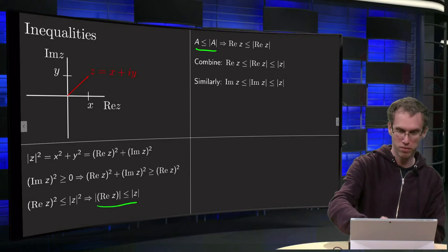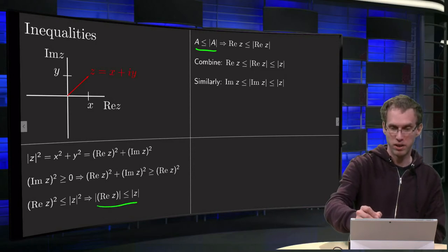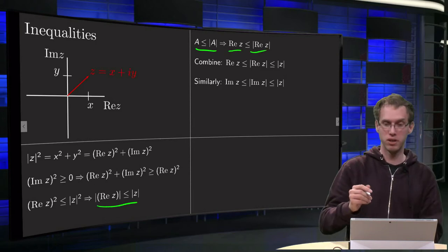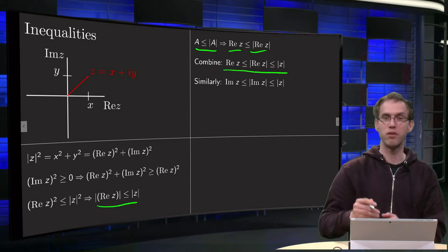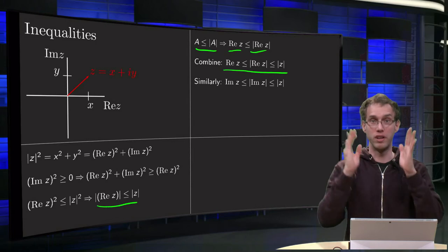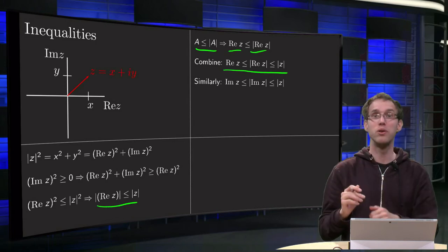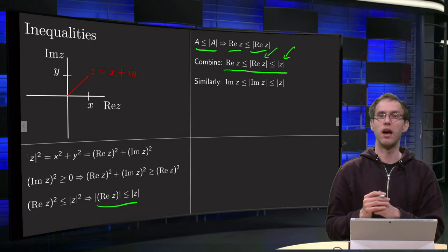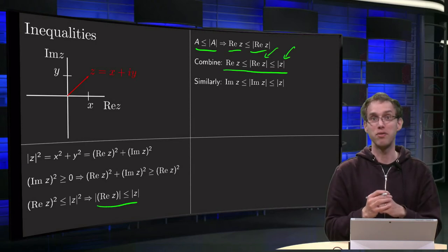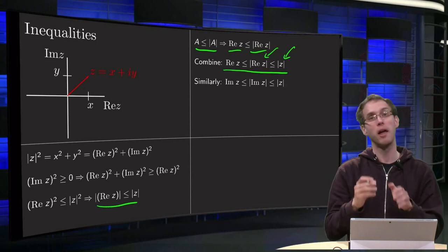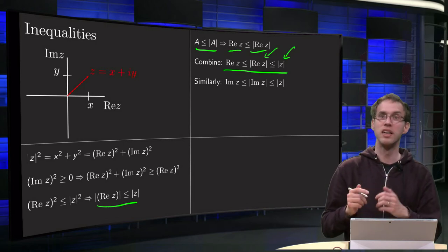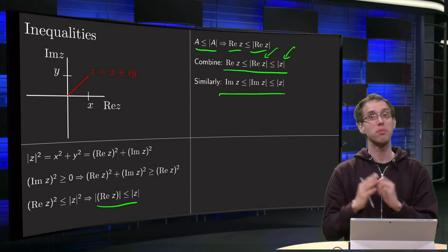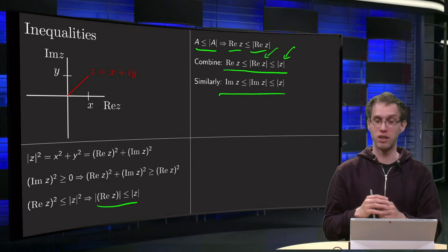Combining this with the previous inequality, and plugging in the real part of z for a, we have: the real part of z is smaller or equal to the absolute value of the real part of z, which is always smaller or equal to the norm of z. Notice that the absolute value signs here actually mean something different — the first ones are the absolute value of a real number and the others are the norm of a complex number. You can do the same for the imaginary part: the imaginary part of z is always smaller or equal to the absolute value of the imaginary part of z, and always smaller or equal to the norm of z.